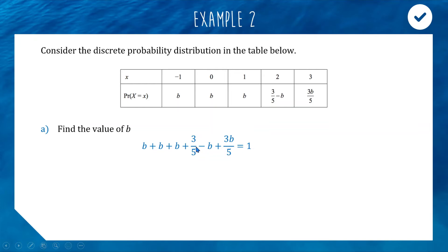To find b, we'll use the fact that the sum of the outcomes of a discrete probability function always equals one. We can form an equation: b plus b plus b plus 3 over 5 minus b plus 3b over 5 equals 1. I'll make this simpler by multiplying each term by 5. We get 13b plus 3 equals 5. Subtract 3 from both sides, divide by 13, and b equals 2 out of 13.